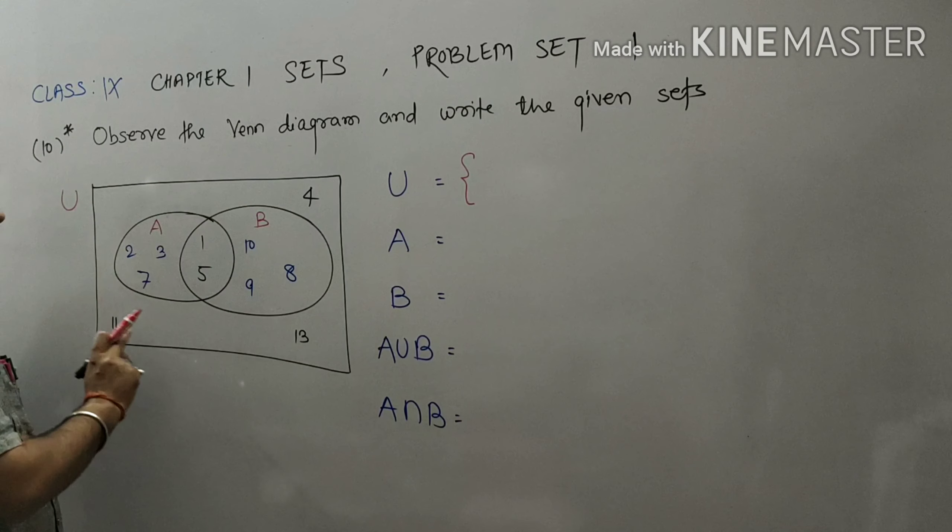Now students, you will write set A. So here set A is what? All the elements of set A are 1, 2, 3, 5, and 7.